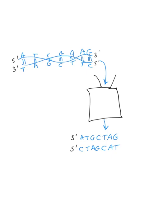This brings up the concept of a reverse complement sequence. For any double helix, if you sequence both strands from the five prime end and write them out with the five prime ends aligned on the left — thus the three prime ends on the right — one of the strands will be the reverse complement of the other.